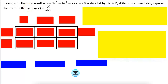Example one. Find the result when 3x cubed minus 4x squared minus 22x minus 20 is divided by 3x plus 2. If there is a remainder, express the result in the form q of x plus r of x over b of x.